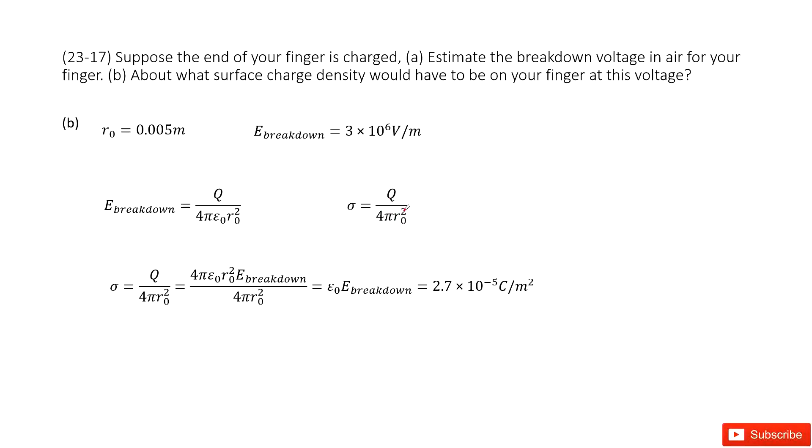We still need to replace the total charge Q as 4πε₀R₀ squared times the electric field at breakdown. So 4π cancels, R₀ squared cancels. We get the function for σ, and then input known quantities to get the answer.